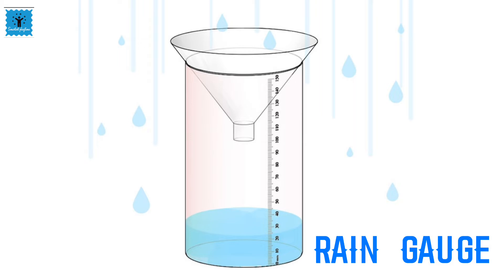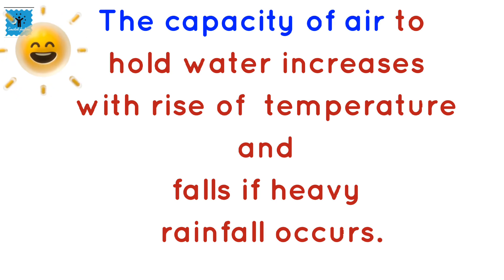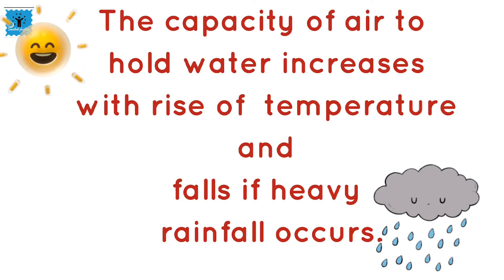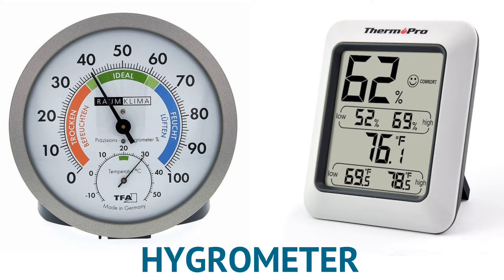The third important factor is humidity. Humidity is defined as the amount of water vapor in air, which causes dampness. Air has the ability to hold a certain amount of water vapor, and the capacity of air to hold water increases with rise of temperature and falls if heavy rainfall occurs. Humidity is measured by an instrument called a hygrometer, also called a humidity meter.